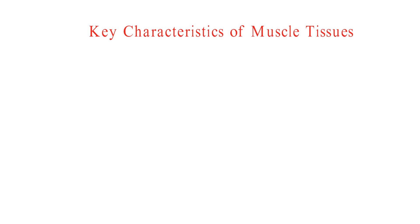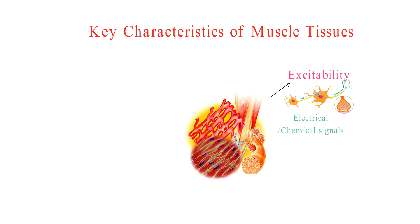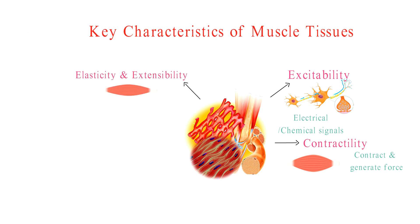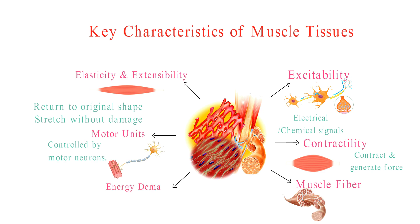Before we wrap up, let's touch on some key characteristics shared by all muscle tissues. Muscles respond to electrical or chemical signals. They can contract and generate force, and return to their original shape after contracting. Muscles can also stretch without damage. Muscle cells are often referred to as muscle fibers. Skeletal muscles work in motor units, controlled by motor neurons. Muscles require a lot of ATP to function.